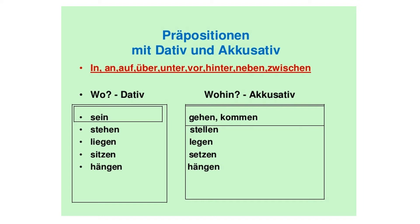There are certain verbs also which are used in Dativ and Akkusativ. For Dativ we have: sein (to be), stehen (to stand), liegen (to lie or to situate), sitzen (to sit), und hängen (to hang). And for Akkusativ, the verbs are gehen and kommen, and apart from that we have stellen (to keep), legen (to put), setzen (to make someone sit), and hängen (to hang something).